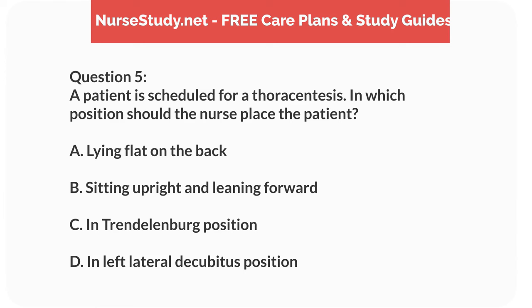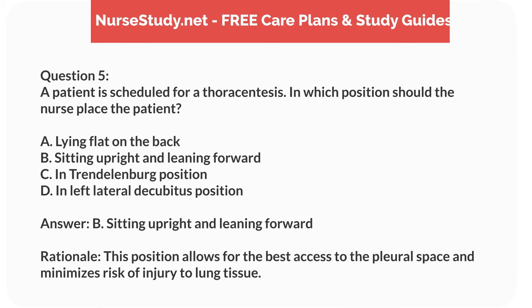Question 5. A patient is scheduled for a thoracentesis. In which position should the nurse place the patient? A. Lying flat on the back. B. Sitting upright and leaning forward. C. In Trendelenburg position. D. In left lateral decubitus position. Answer: B. Sitting upright and leaning forward. Rationale: This position allows for the best access to the pleural space and minimizes risk of injury to lung tissue.